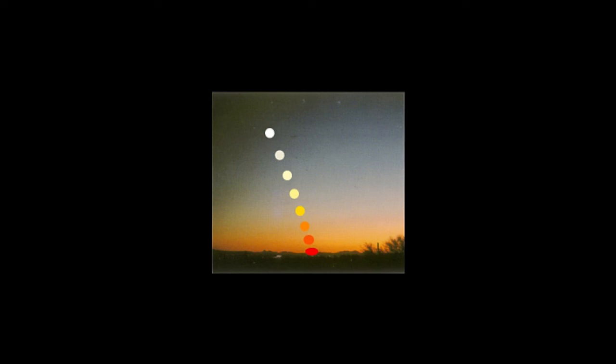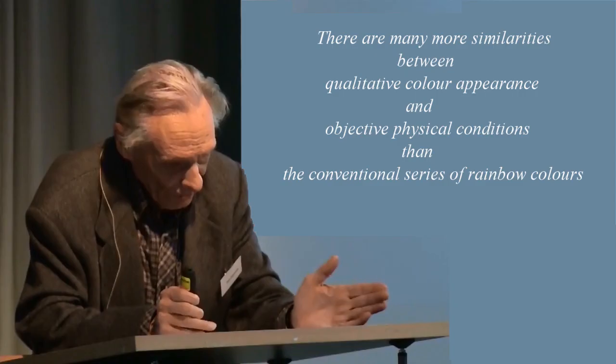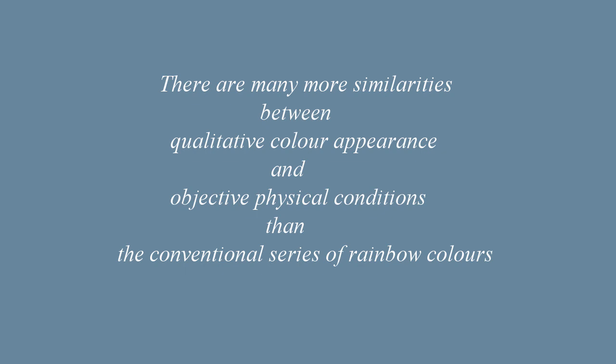The sun image shows a more gradual change of hue in correlation with a more profound darkening. When it comes to lovely flower petals, their brilliant colors are mostly due to a strong absorption band at various positions within the visual range. Hence, their reflectances are quite like ideal colors. So, in conclusion, there are many more similarities between qualitative color appearance and objective physical conditions than the series of rainbow colors mostly referred to.